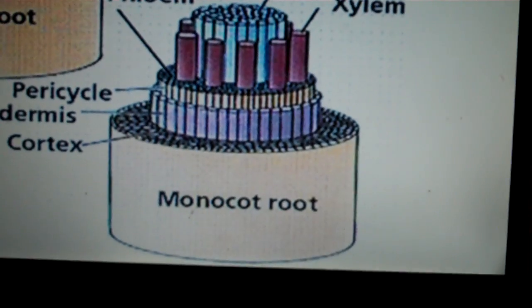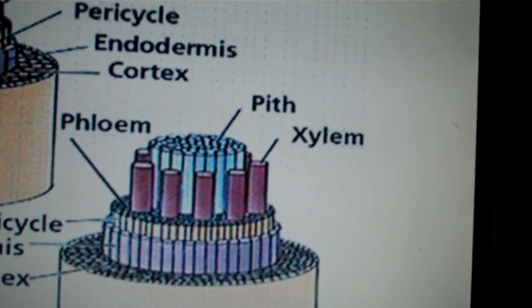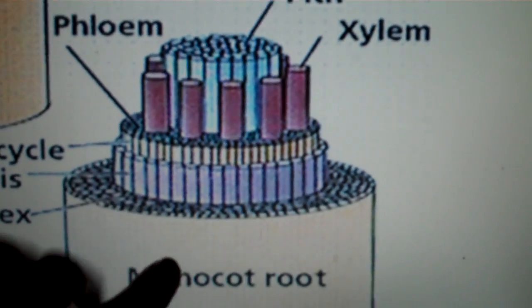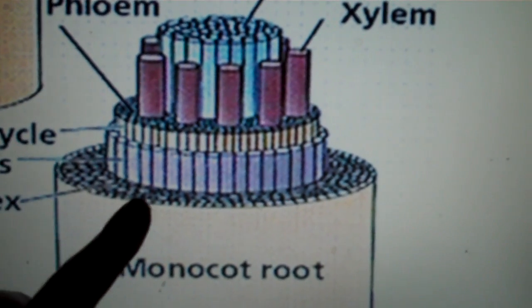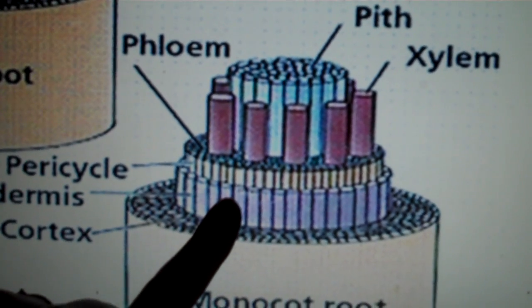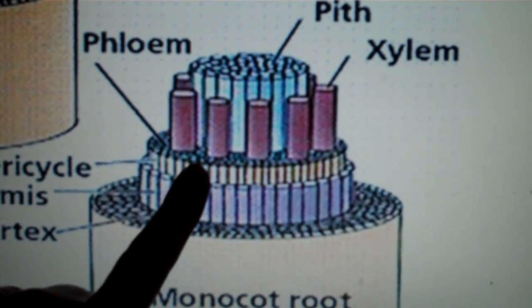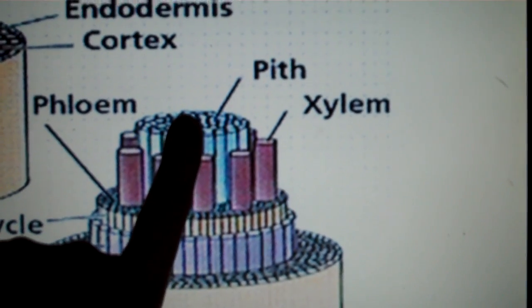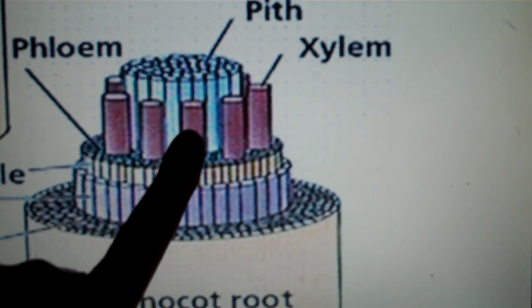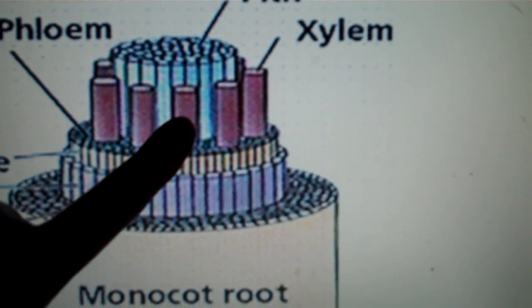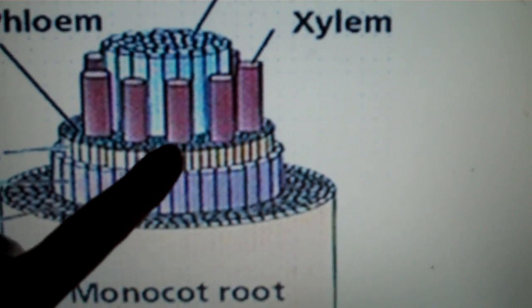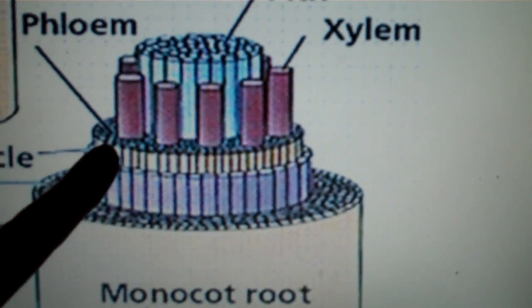Now in a monocot root, there is no vascular cylinder that you see here. It is organized in this way where we have our cortex, our endodermis, our pericycle, the same as the dicot. However, there is a pith in the monocot root system. We have our xylem, which are these pinkish tubes that are going to transport water. And then we have our phloem, which is the blue part around the pink part, that is going to transport the sugar.